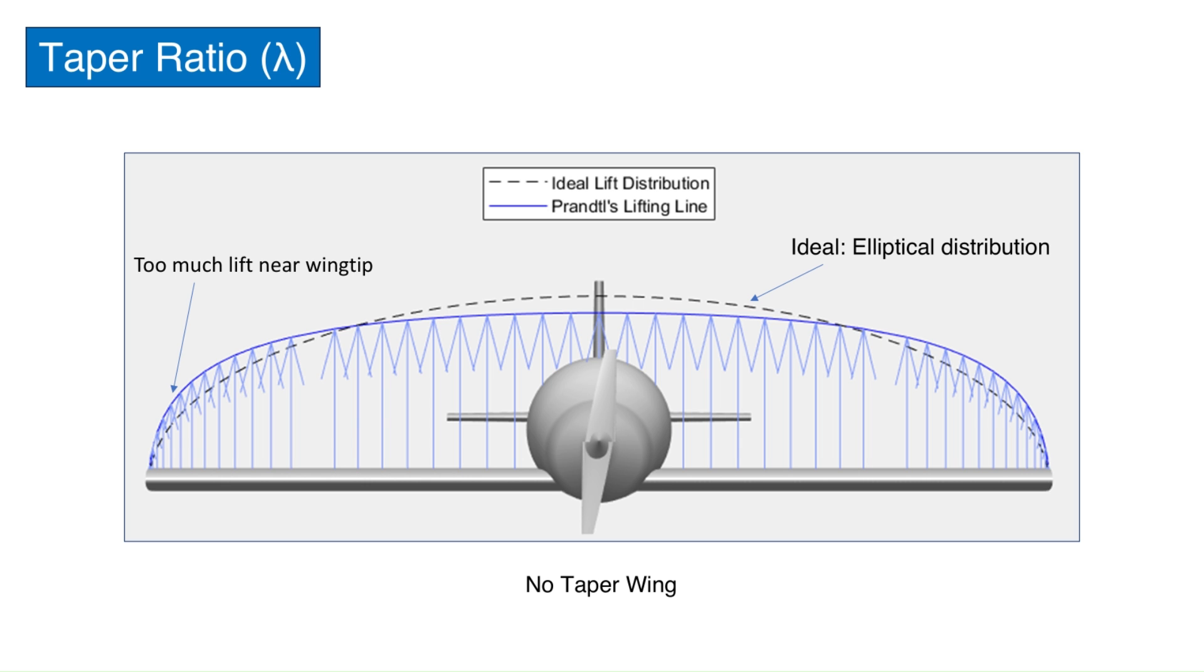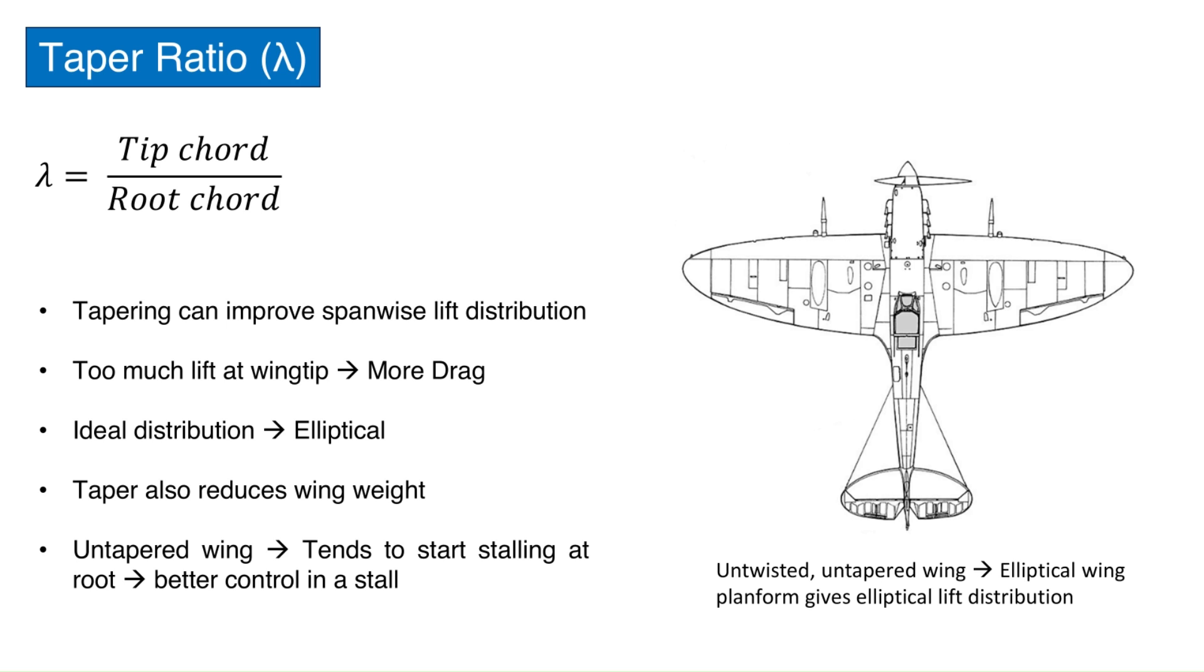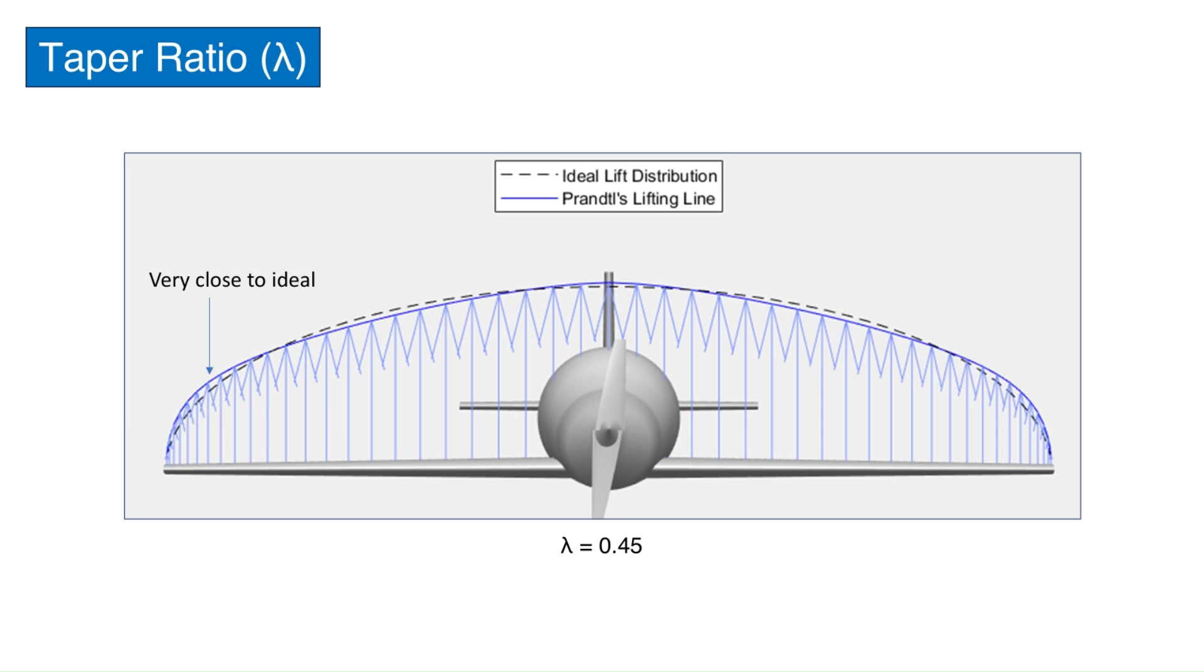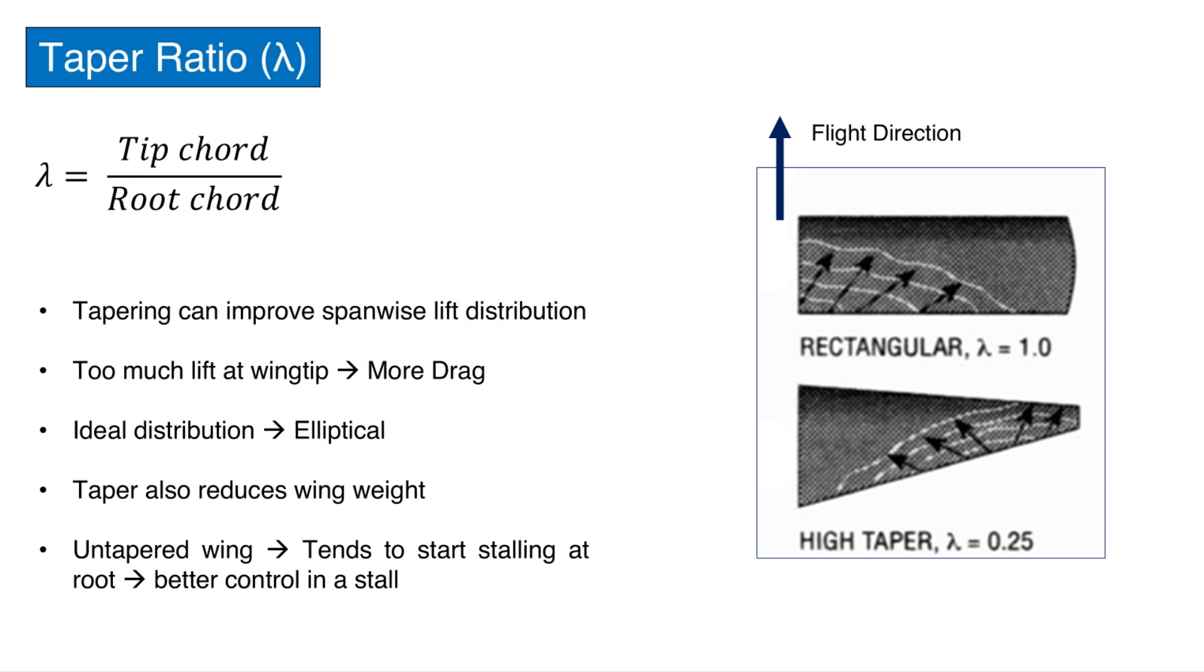For an untwisted and unswept wing, this occurs when the wing itself is shaped like an ellipse. This design can be seen on the famous Spitfire aircraft. The elliptical wing is not popular today because it is difficult and more expensive to produce. A taper ratio of 0.45 is almost as good as an elliptical wing and is relatively easier to make. Taper also reduces weight as the root cord is longer and thus is better suited to handle the bending moments. If the taper ratio is too high, meaning that the tip cord is too small, there could be a problem of tip stall. In this regard, the untapered wing has an advantage.